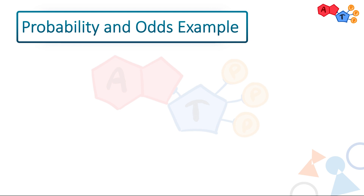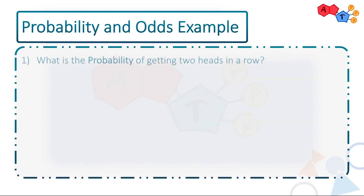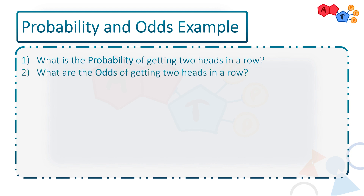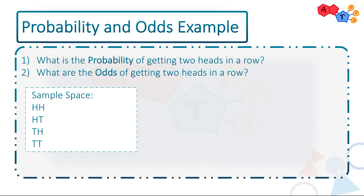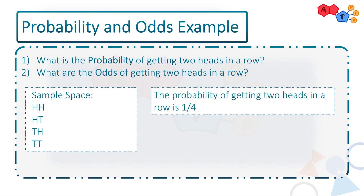Suppose we toss a coin twice. What is the probability of getting two heads in a row? What are the odds of getting two heads in a row? They're distinct. The best way to highlight that is by writing out all the different possibilities — our sample space: heads-heads, heads-tails, tails-heads, and tails-tails. Probability is the chance of getting a particular event compared to the total sample space, so the denominator does include two heads in a row — it's one out of four. But odds show the likelihood of getting a particular event compared to all other events, so the denominator does not include two heads in a row — it's one to three.